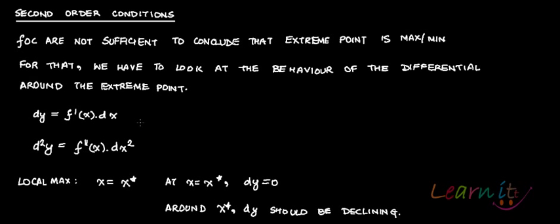In our earlier recording we have seen the first-order conditions. We also gave an example to show that first-order conditions are not sufficient to confirm that the critical point you found is indeed a maximum or minimum point. In order to check for that, you need to find out second-order conditions.